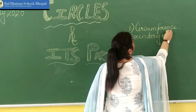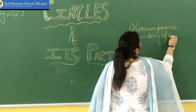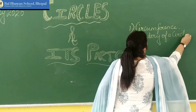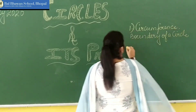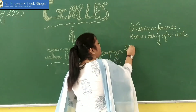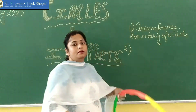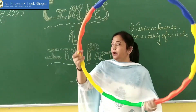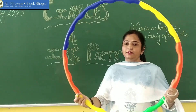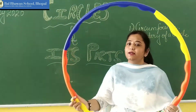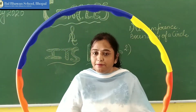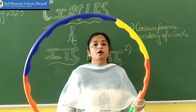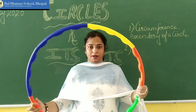The boundary of a circle is the circumference. Now this is the boundary of a circle. It is the circumference. Now our second part.